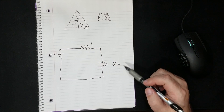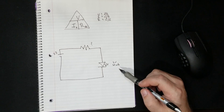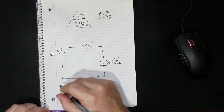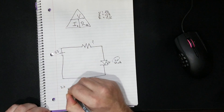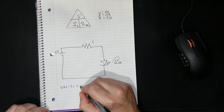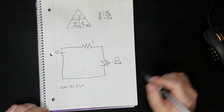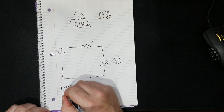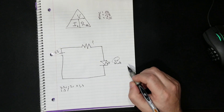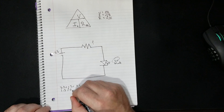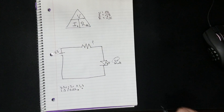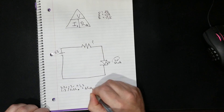Voltage divided by amperage gives us our resistance value in ohms. We take the volts and subtract them from each other: 3.3 volts from the Pi minus 2 volts that the LED uses gives us 1.3 volts total. Then 1.3 divided by 20 milliamps — which is 0.02 amps — equals 65 ohms of resistance.